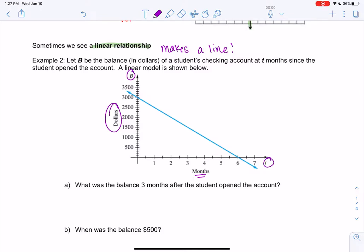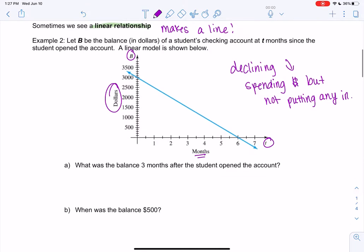And it looks like it's declining, which means they're losing money or spending money, since it's going down. So they're probably spending money but not putting any money in. Just so we can get used to what these patterns mean.